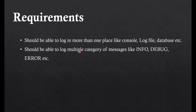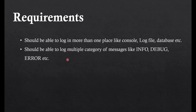The second requirement is that you should be able to log into multiple categories of message. For example, a general message you want to print for debugging purpose can be put into an info message so you know how your code is flowing. If you want to debug at a finer level, you can categorize those as debug logs. Finally, there can be error logs. In Java, there are different categories like fine, finer, debug, error, and so on.